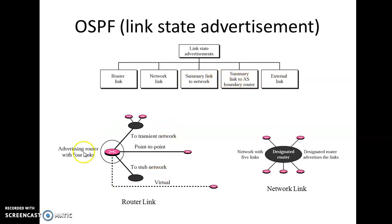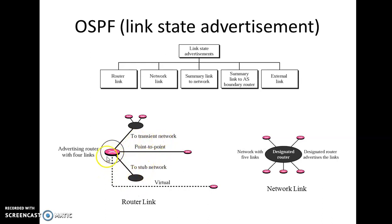Talking about the router link: a router can advertise four different link types. As seen in the diagram, the four links shown are: to a transient network, to a point-to-point network, to a stub network, and to a virtual network.